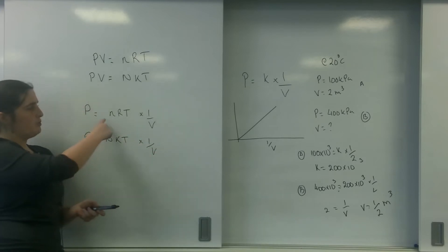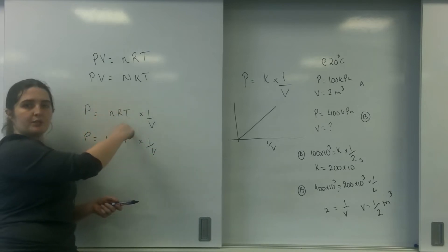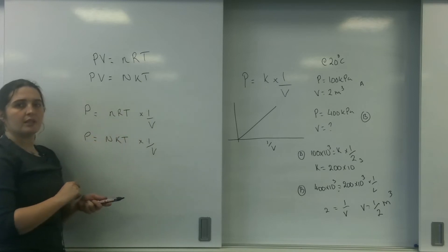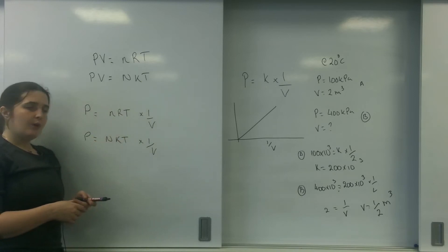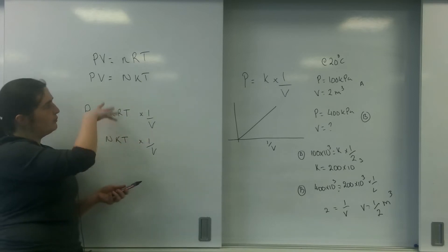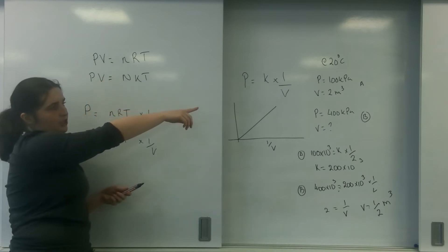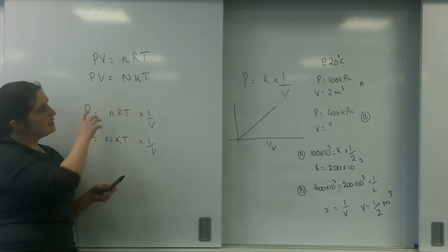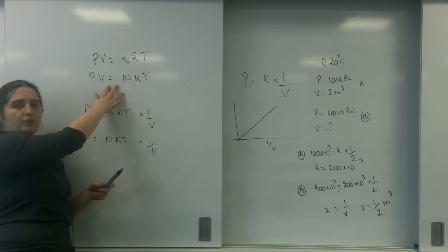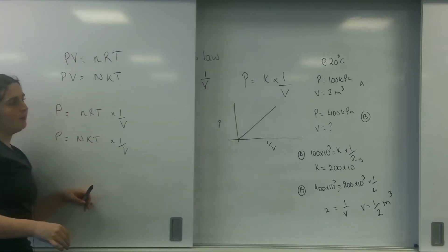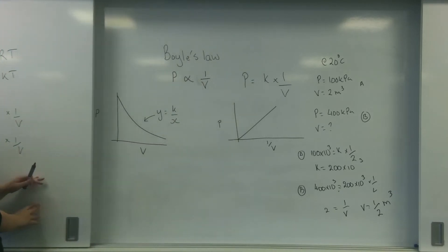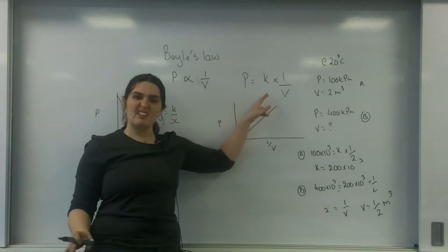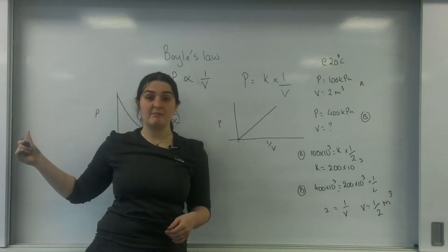In my situation, I assumed that n, R or K, and T were all constant. So all this formula is doing is using that one there. The formula on the data sheet is the one to use, but Boyle's Law is literally just a derivation of that.